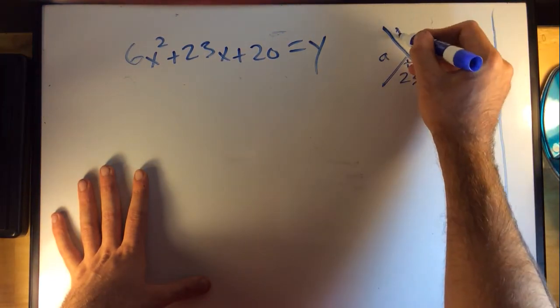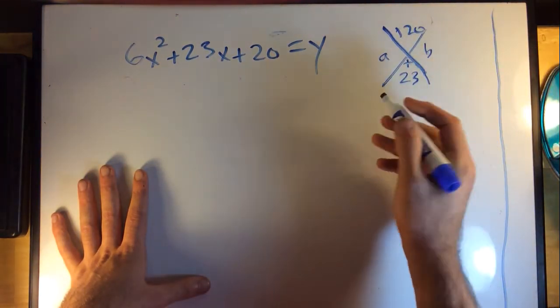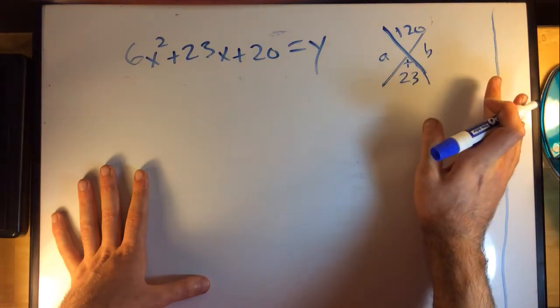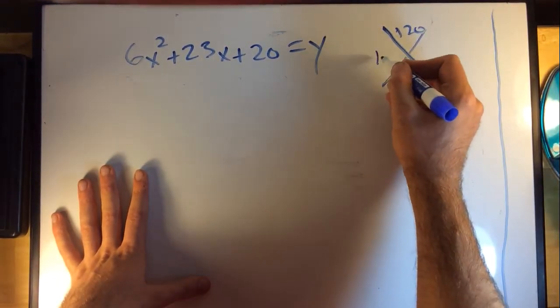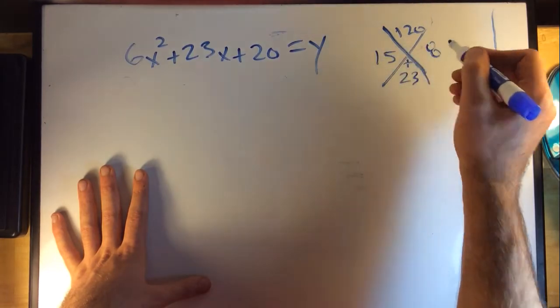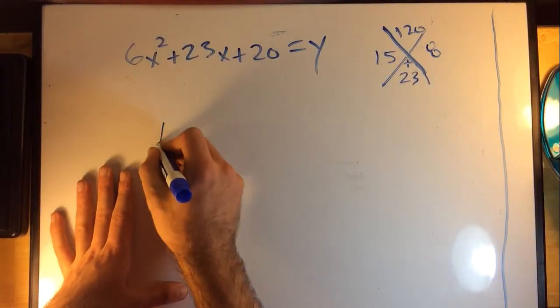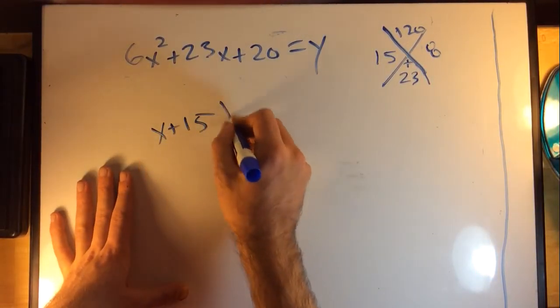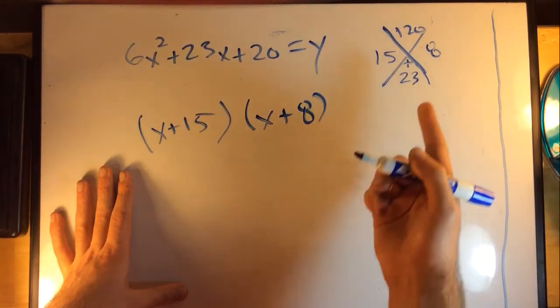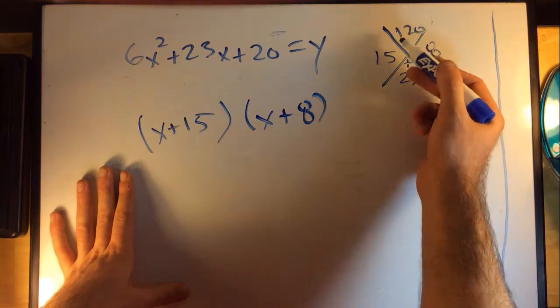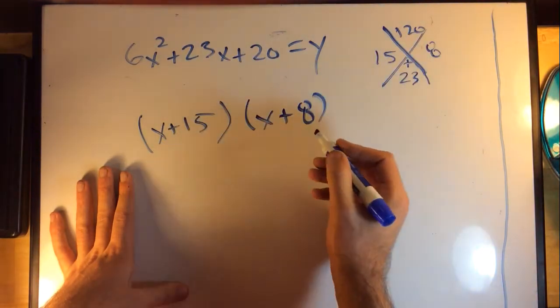After you've thought about the sum, maybe you'd come to a and b are going to be 15 and 8. You would say okay, (x + 15)(x + 8), and then you said okay I had to multiply by 6 to get my top number, so now I'm going to divide by 6 on both of these.